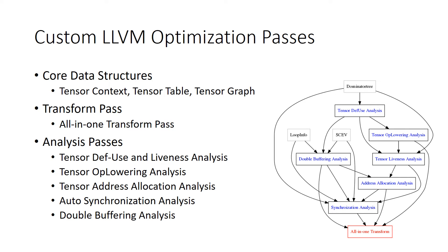For the LLVM optimization process, we introduced three core data structures: tensor context, tensor table, and tensor graph. The tensor context is a module-level singleton class which contains a tensor table and a tensor graph. The tensor table collects all tensor-related information inside the function, and the tensor graph collects CFG-related information on the tensor, such as instruction insertion position.